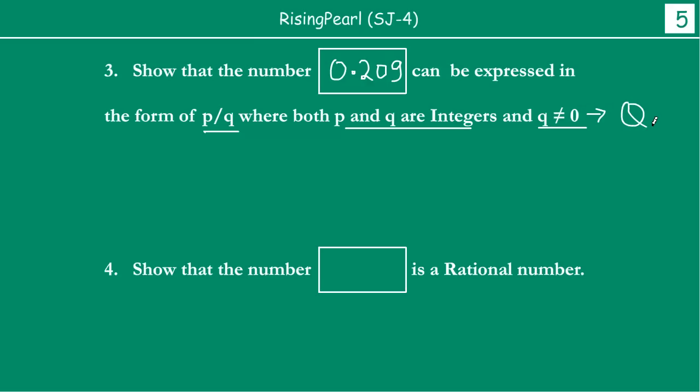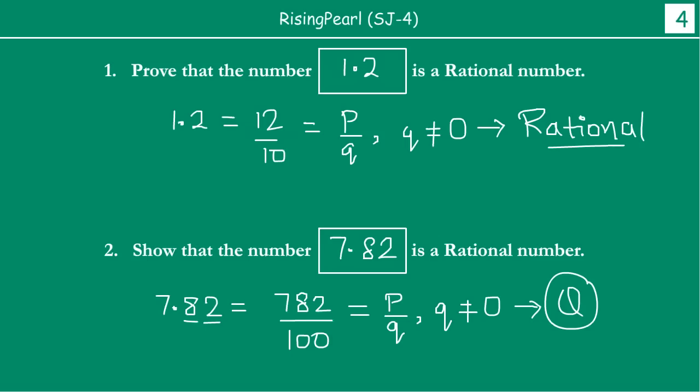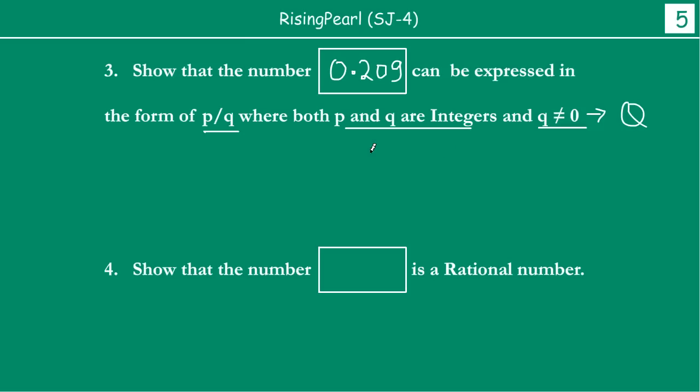It is important for you to understand that this question is exactly the same as the last question where we talked about proving that the number is a rational number. Instead of using that language, the question states: show that this can be expressed in the form p by q where both p and q are integers, q not equal to 0.